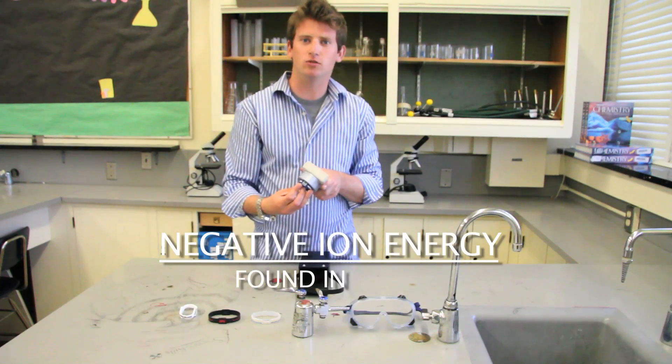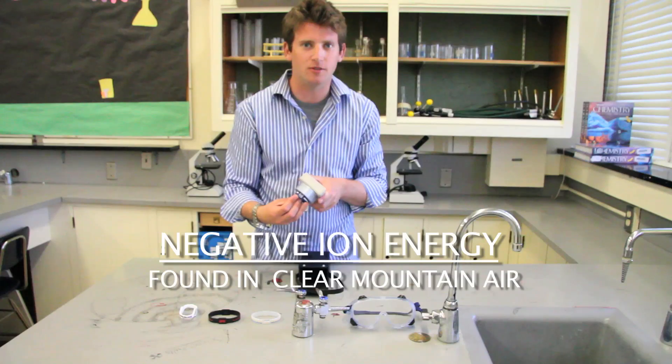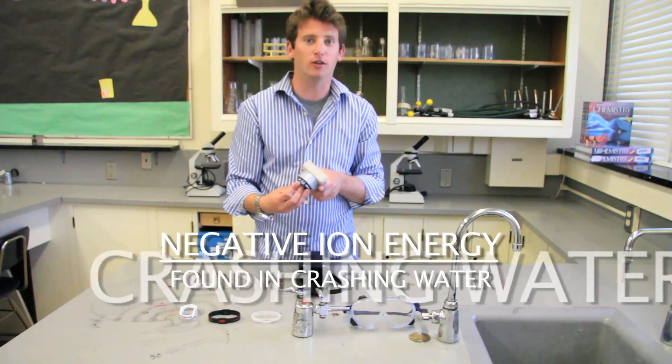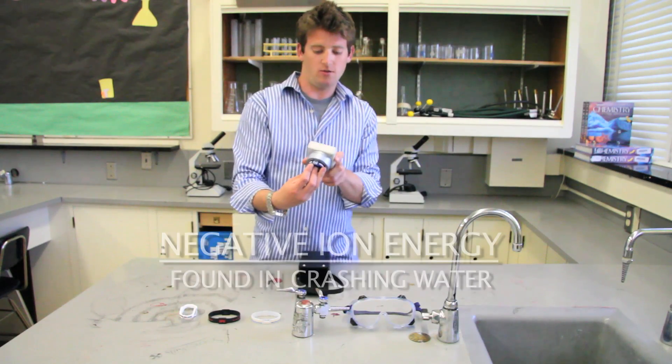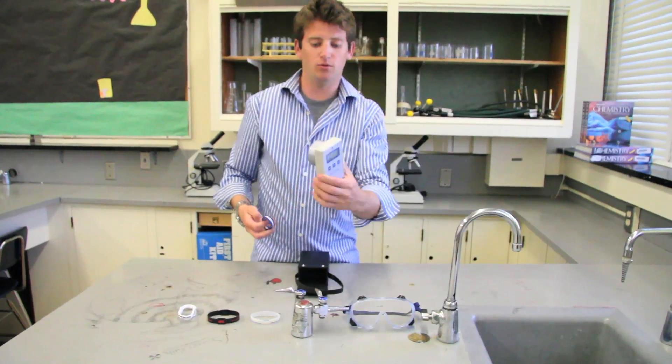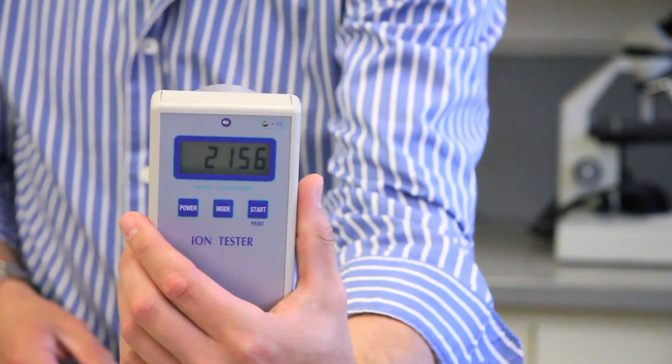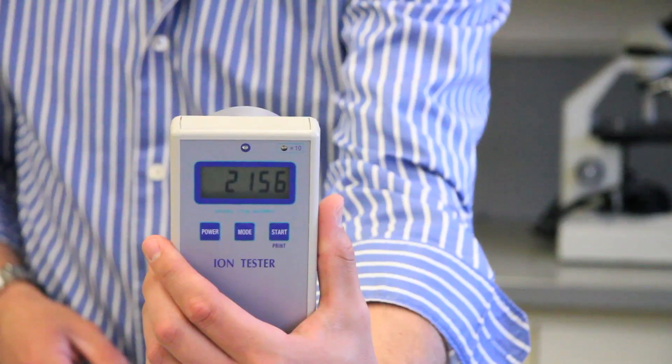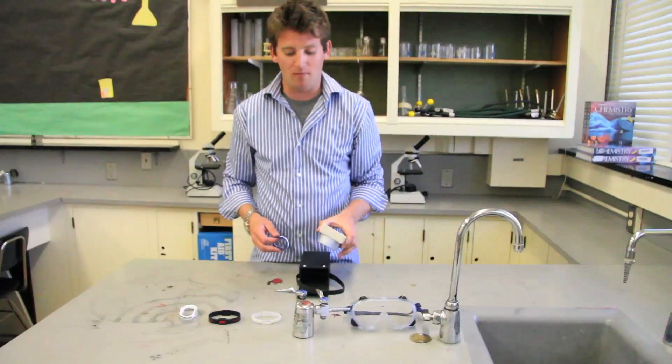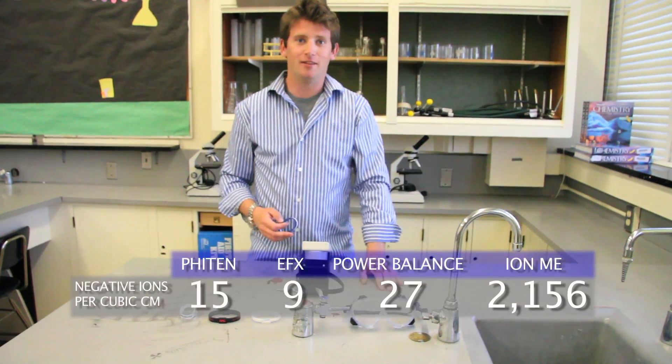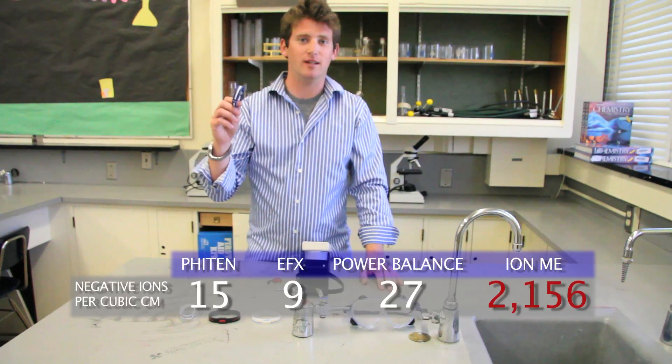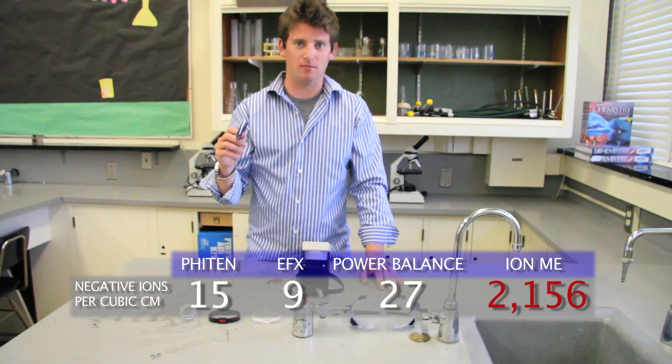Ion energy can be found in soil, clear mountain air, which reminds me of Maryland, and water crashing, believe it or not. Oh, our verdict is in. 2,156 negative ions per cubic centimeters. I mean, I'm no math teacher, but I think our study speaks for itself. The ion me has the most negative ions per cubic centimeter.